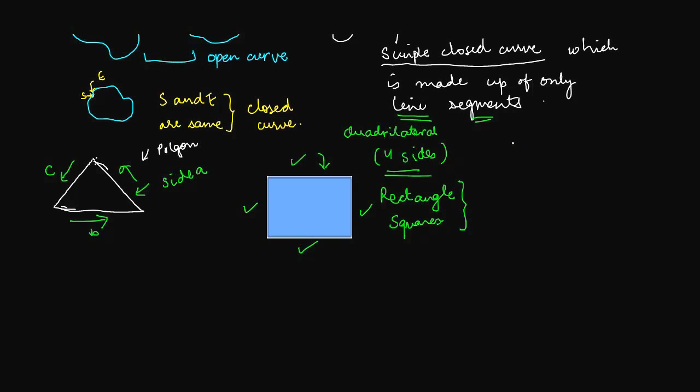Then depending on the number of sides, you have other polygons such as pentagon with five sides, hexagon with six sides, heptagon with seven sides, octagon with eight sides, nonagon, and the pronunciation might be a little different depending on where on this earth you are located, with nine sides, and decagon with ten sides.